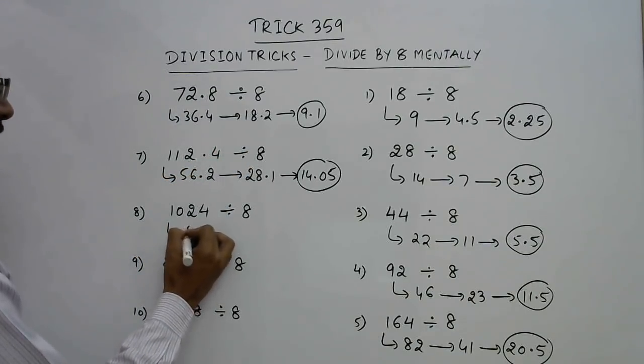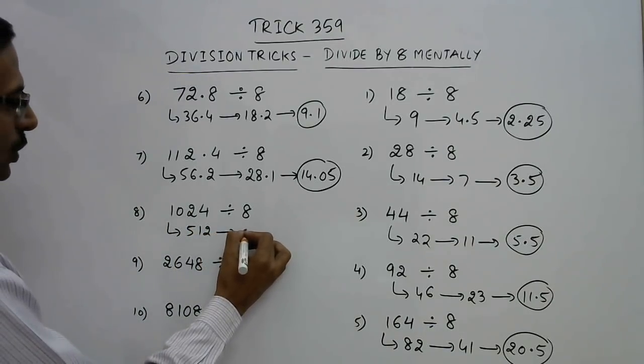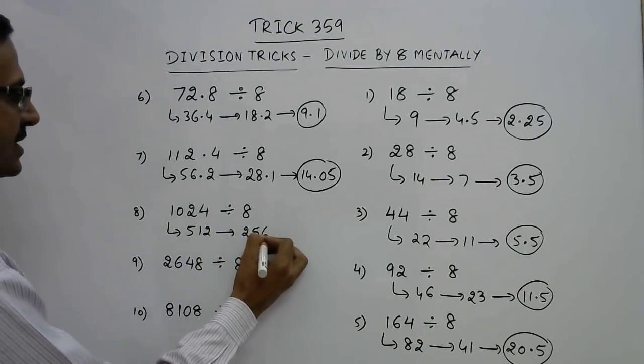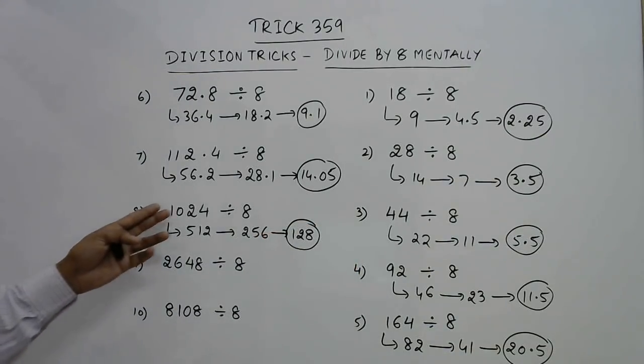More examples. See, 1024: 512 is the first half, then the second half 256, third half 128. So 1024 divided by 8 is 128.